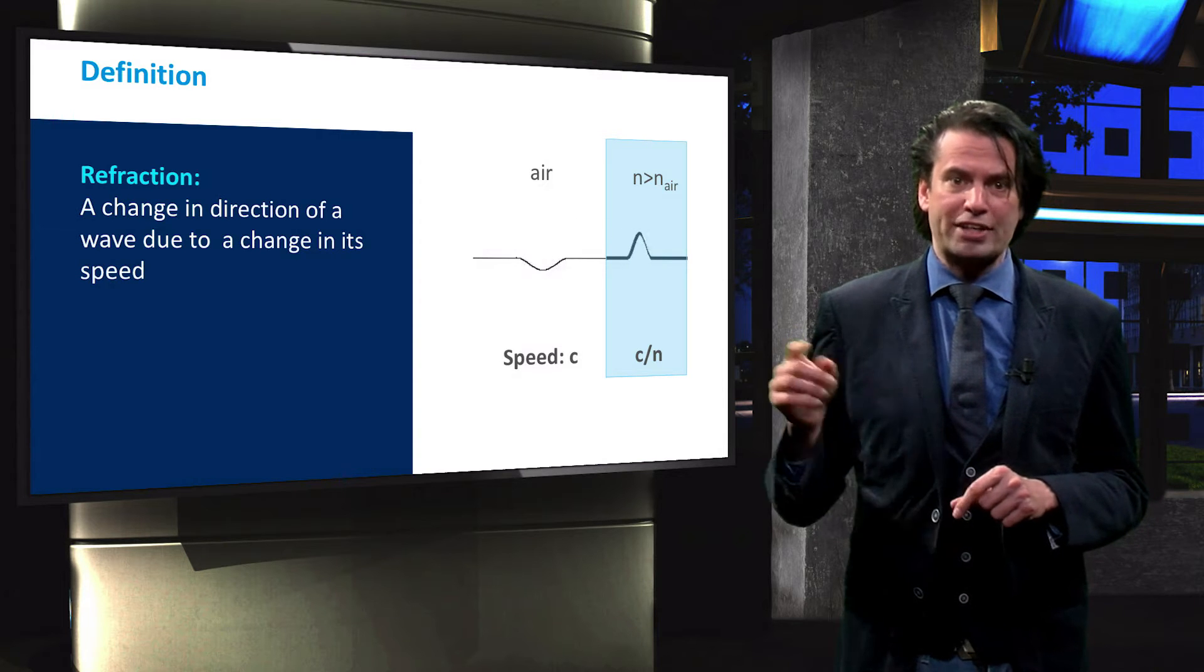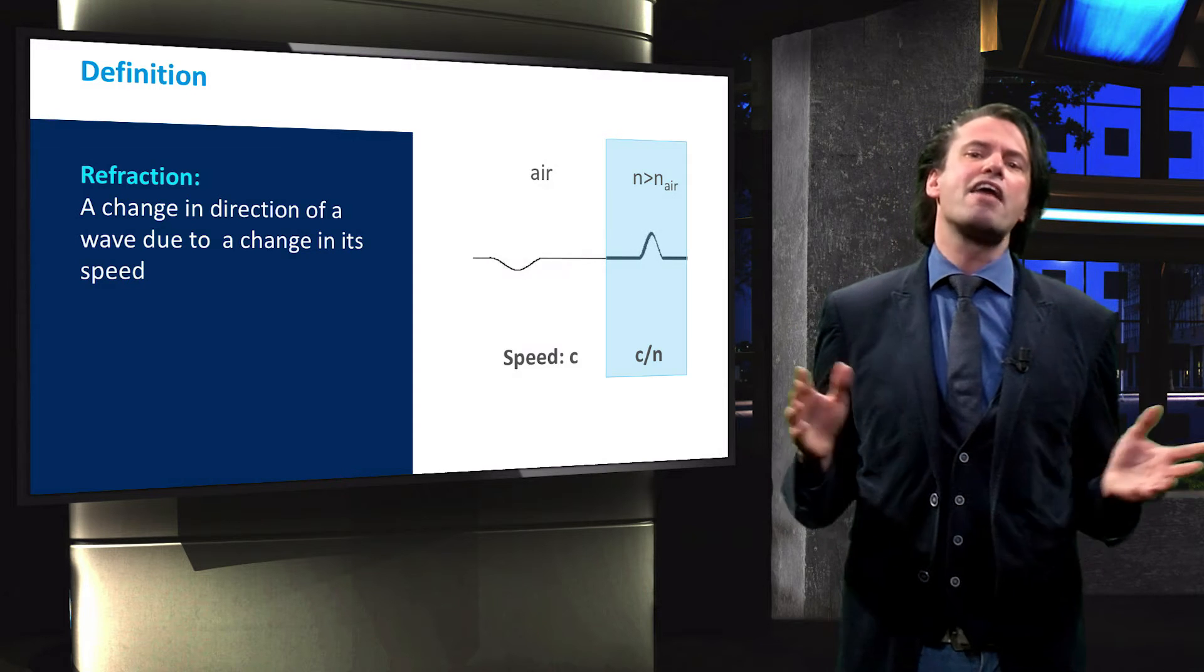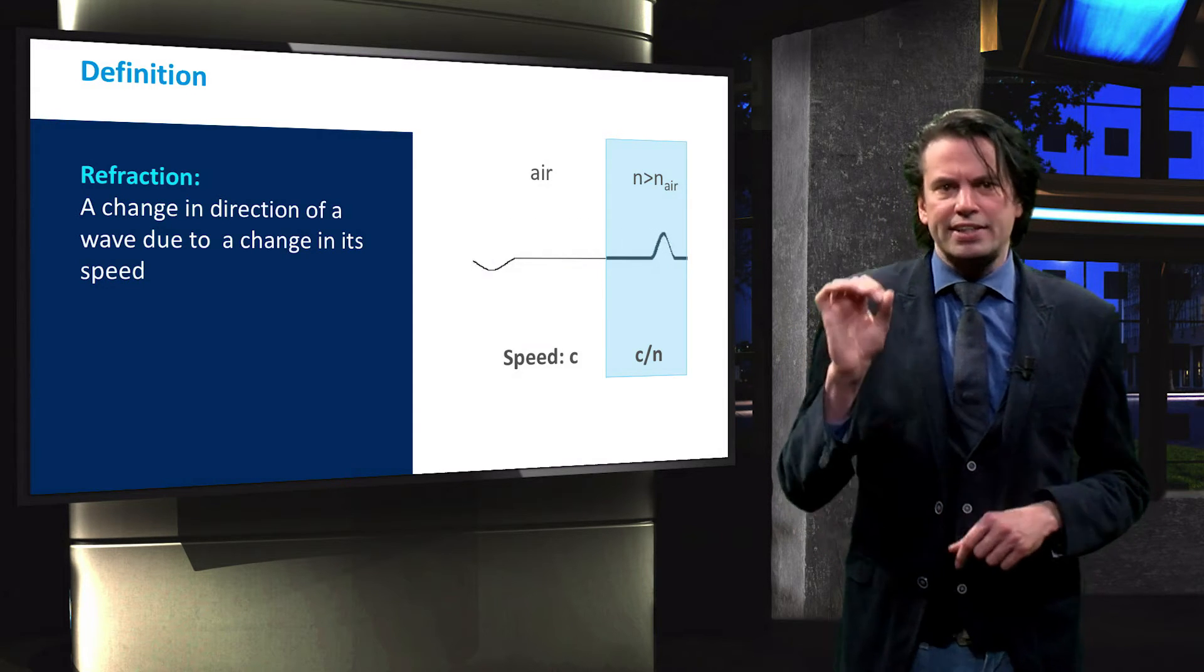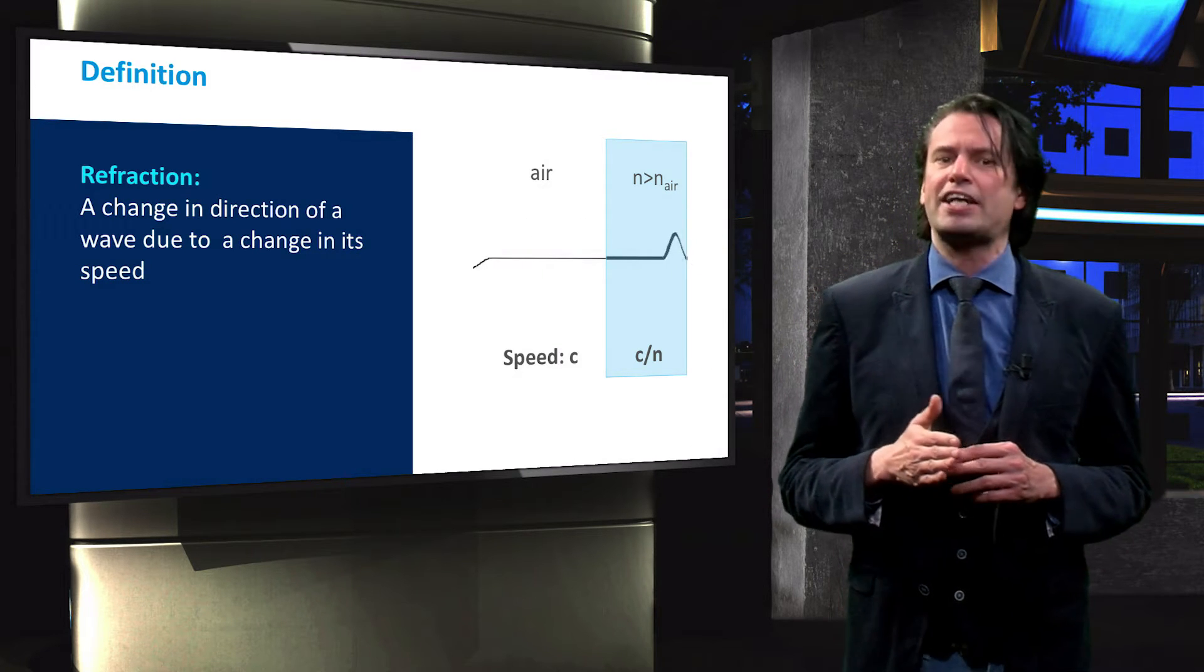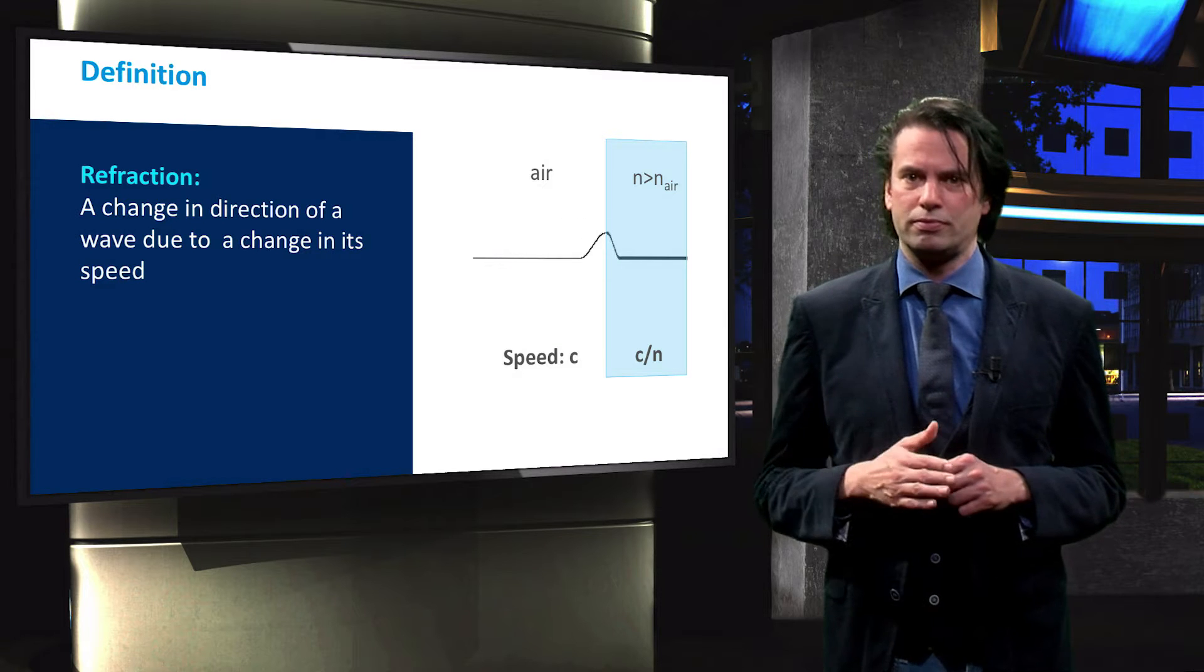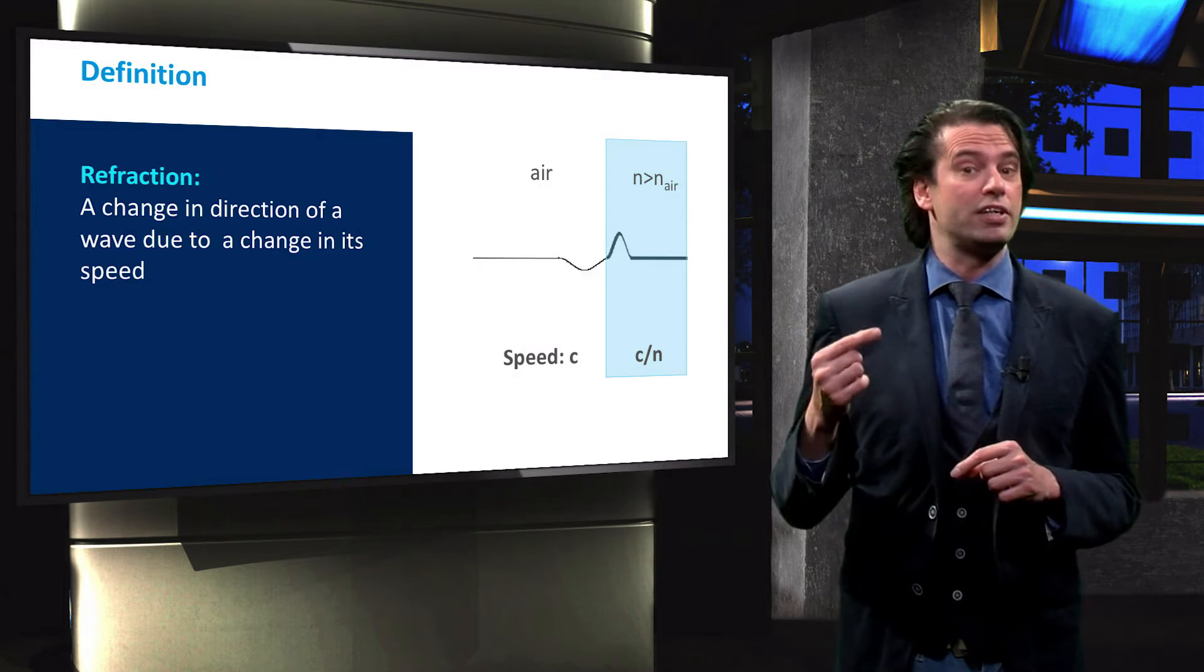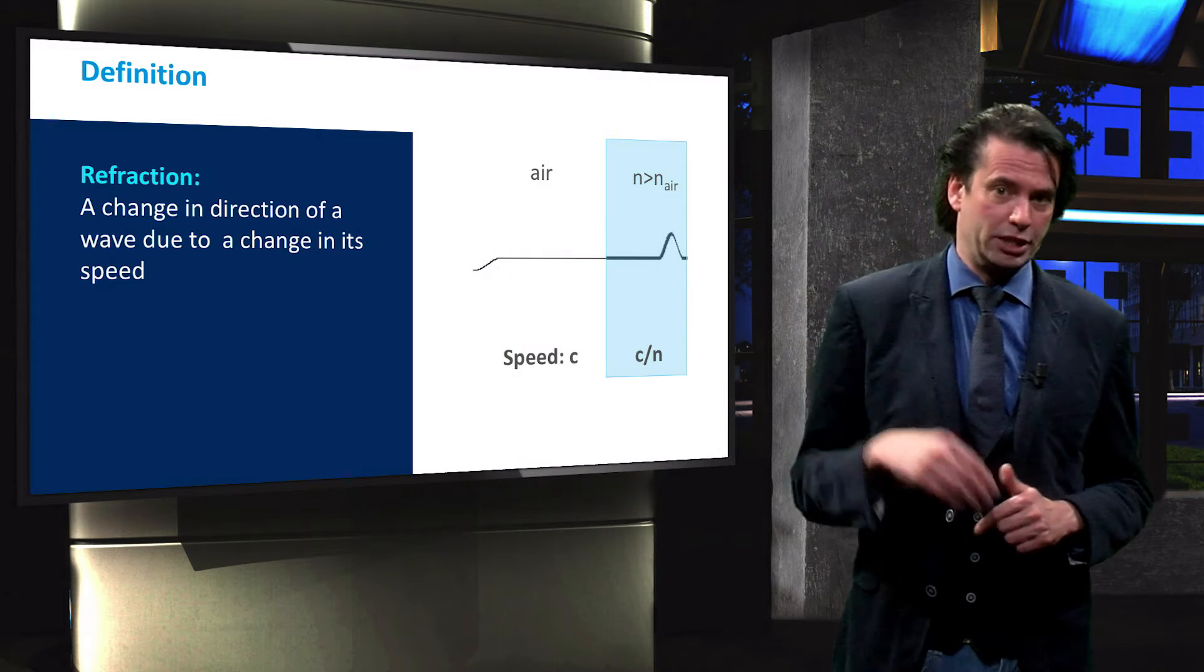Transmitted waves and waves reflected off the surface of a medium with a lower refractive index are in phase with the incident wave. Inside the light blue medium, the transmitted wave will propagate at a fraction of its initial speed. This fraction is equal to the ratio between the refractive index of the initial medium to the refractive index of the new medium.